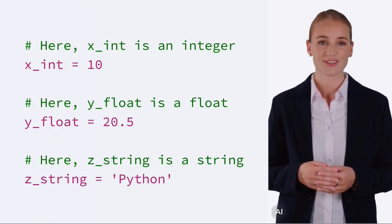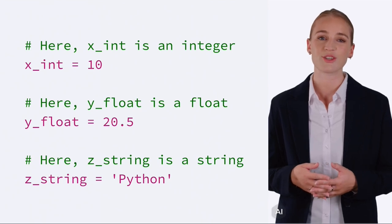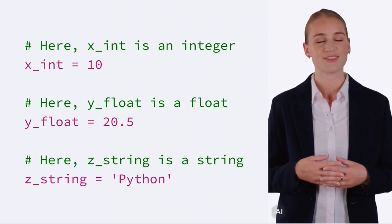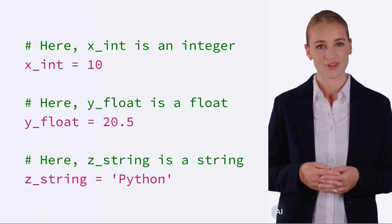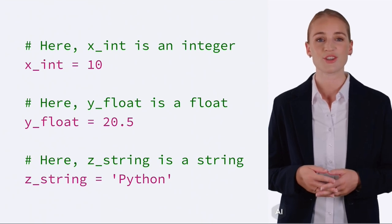In this example, x_int is a variable storing the integer 10, y_float is a variable holding the floating point number 20.5, and z_string is a variable containing the string 'python'. These variables can then be used elsewhere in your code.